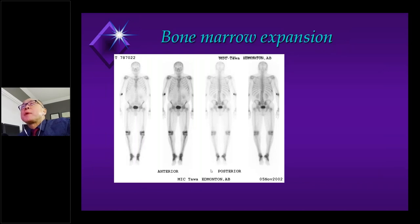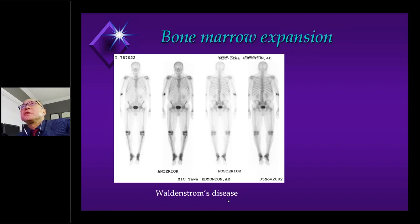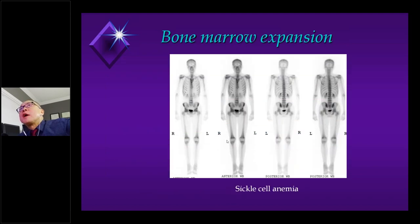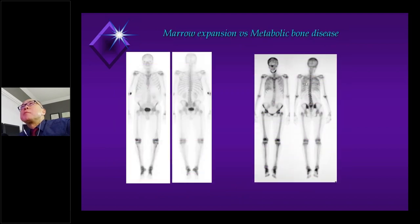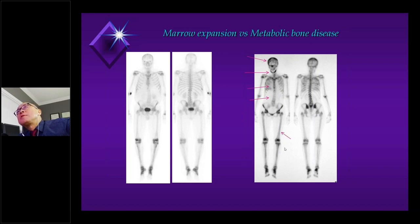Marrow expansion is another pattern we learn: prominence of distal appendicular uptake with periarticular prominence, symmetric. This is seen in patients with Waldenstrom's disease or sickle cell anemia, with actual metaphyseal prominence. The key difference from metabolic bone disease is that marrow expansion lacks calvarial and mandibular uptake, soft tissue uptake, and absent renal activity — those features are all absent with marrow expansion pattern.